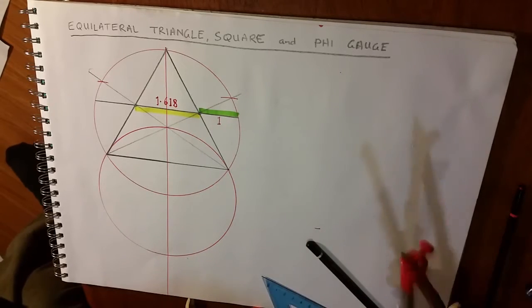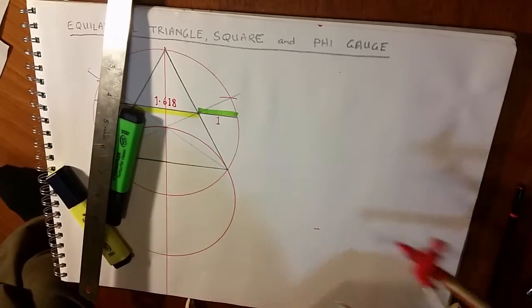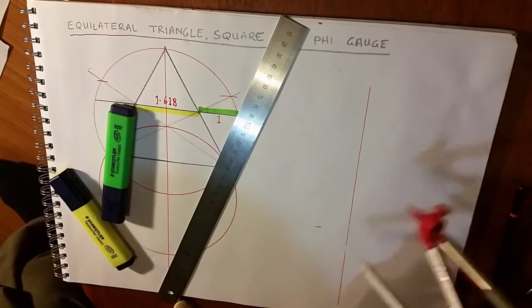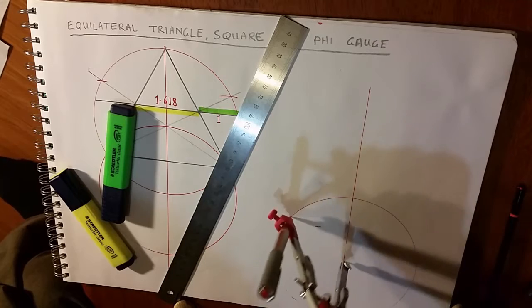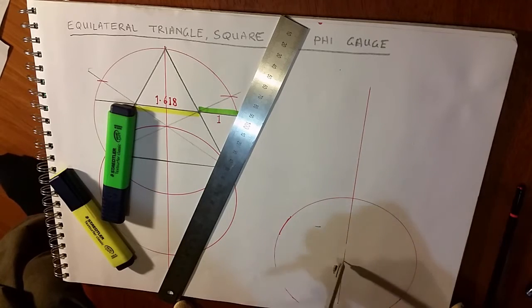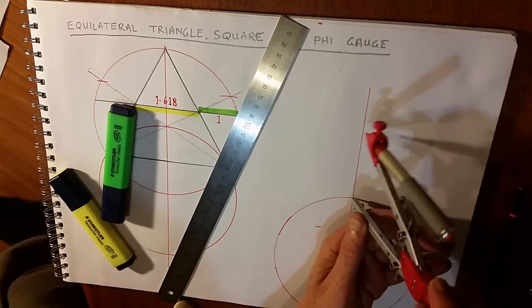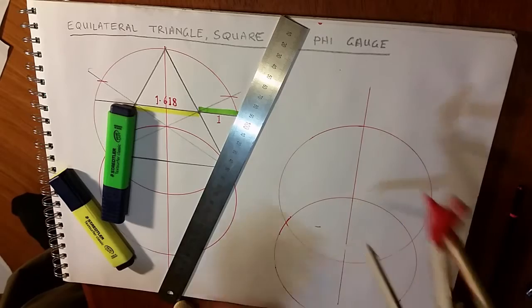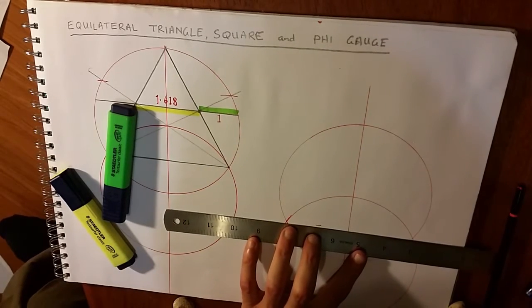Now we can easily test another method. And we're going to do that by again drawing a vesica piscis. Just off the page, but it doesn't matter. So now we're going to do a construction line.